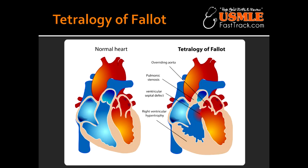What are the four components of Tetralogy of Fallot? The four things — which is what 'tetralogy' means — are: pulmonary infundibular stenosis, right ventricular hypertrophy, overriding aorta, and ventricular septal defect. These are the four things that happen in Tetralogy of Fallot.